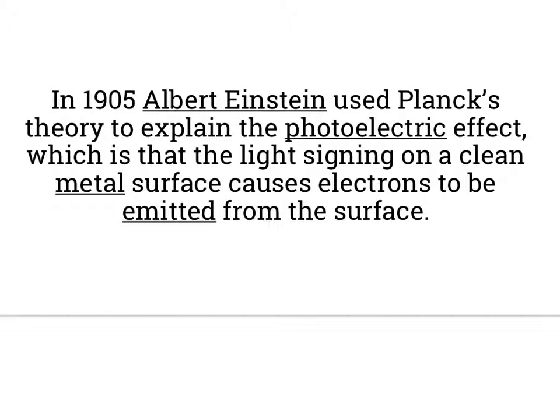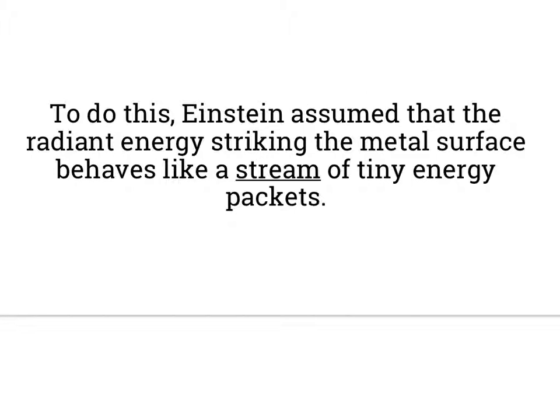So in 1905, Albert Einstein used Planck's theory to explain the photoelectric effect, which is another issue, which is that light shining on a clean metal surface causes electrons to be emitted from the surface. So you shine light on metal and it pops off electrons. And Einstein's like, that's kind of weird.